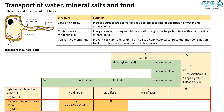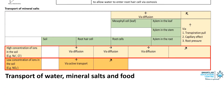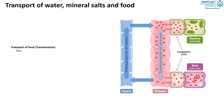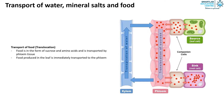Linking back to the structure of root hair cells, the large amount of mitochondria present makes this possible. Lastly, we will look at how food is transported. This process is also known as translocation. Food is in the form of sucrose and amino acids and is transported by the phloem tissue. Food produced in the leaf is immediately transported to the phloem, and this results in a higher concentration of food in the phloem than in the leaf, thus food is transported via active transport.